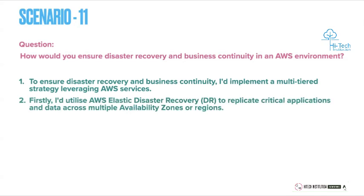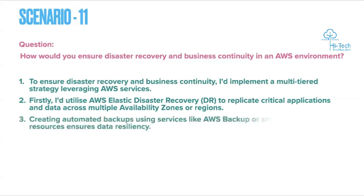Second, I would utilize AWS Elastic Disaster Recovery to replicate critical applications and data across multiple availability zones or regions. Between regions or availability zones, we need to properly plan for DR to ensure that data and applications are distributed. If my primary availability zone or region goes down, I would still be able to recover my service from the secondary availability zone or region.